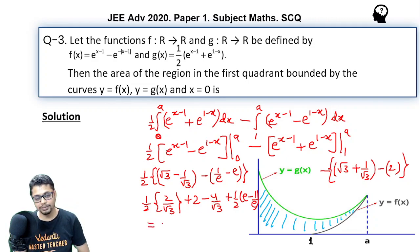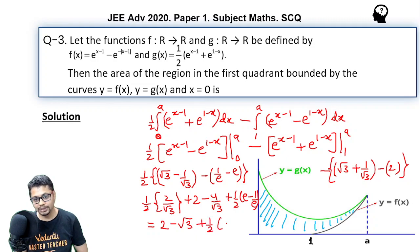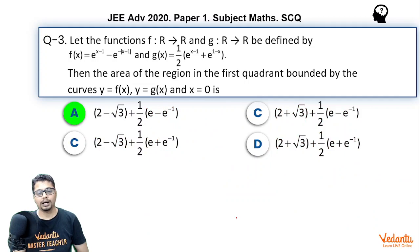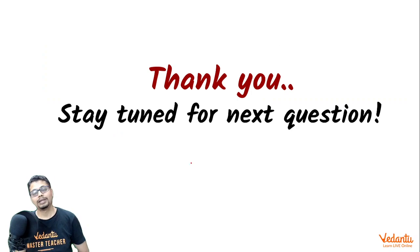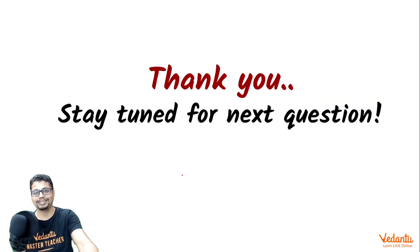So essentially, the final answer is 2 − √3 + ½·(e − 1/e). That means among the given options, A is the correct answer. Thanks for listening. Stay tuned for the next question.